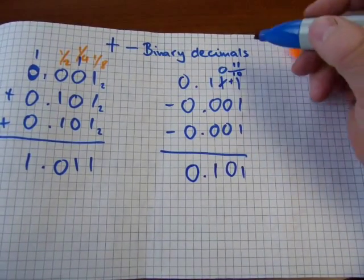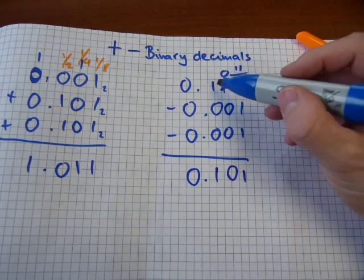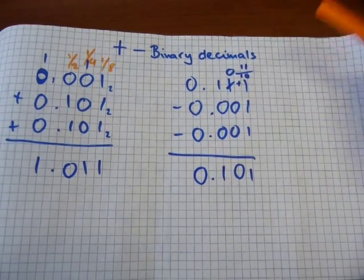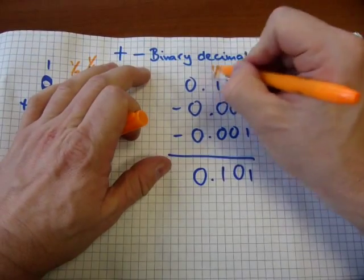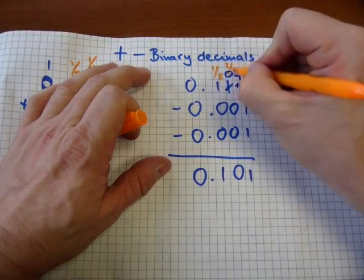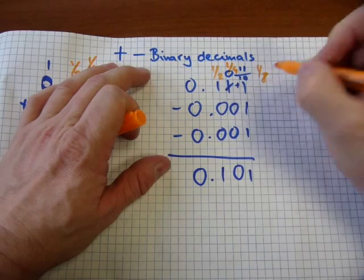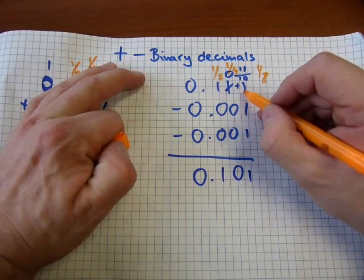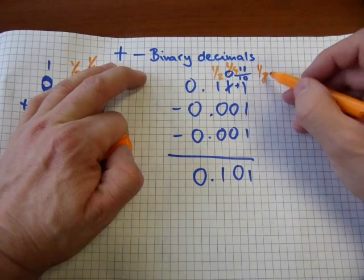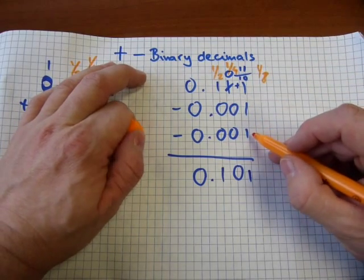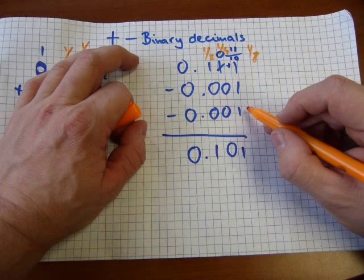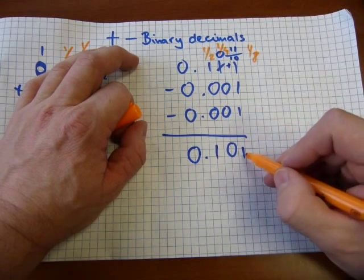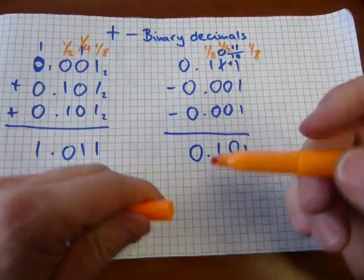In essence, that digit one is in the halves place value column. Halves, quarters, and those were the eighths. So that number is a half, a quarter plus an eighth is seven eighths. Seven eighths minus an eighth minus an eighth is five eighths. So there's the half, and there's one more eighth, five eighths. So this one checks out too.